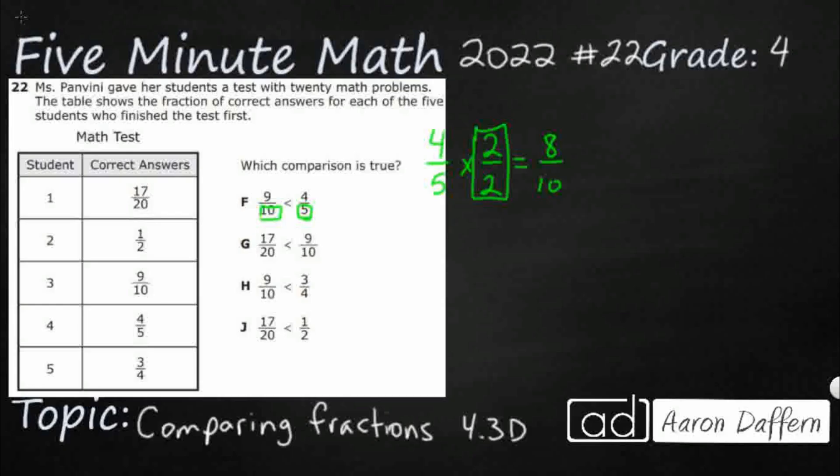So instead of 9 tenths is less than 4 fifths, I'm going to replace it with this 8 tenths. It says 9 tenths less than 8 tenths. No. See how obvious it is now? No. Of course not. It needs to be greater than. So we're looking for the comparison that is true. So it's definitely not F.